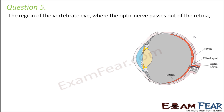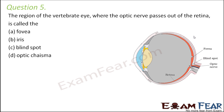Question number 5: The region of the vertebrate eye where the optic nerve passes out of the retina is called the fovea, iris, blind spot, or optic chiasma. The optic nerve passes out of the retina at the blind spot. So blind spot is the correct answer.